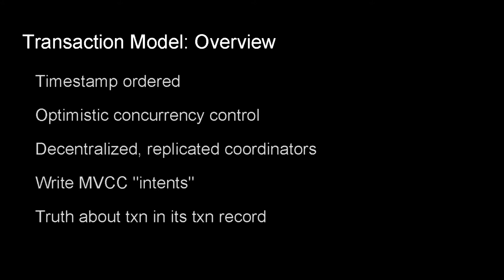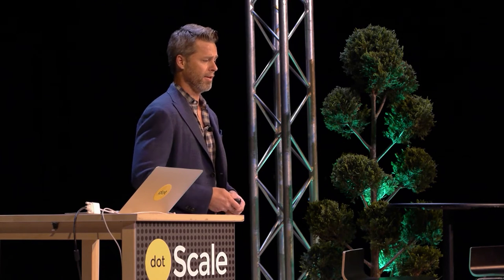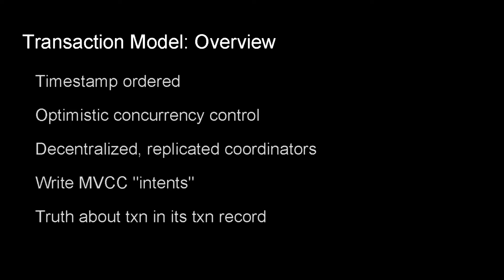The transaction model is timestamp-ordered, meaning we choose timestamps to attach to transactions and use those when checking for access and which version of a value to return. It's also optimistic in terms of concurrency control — we wait until the end of the transaction to decide whether it succeeded and whether it needs to be restarted. We have decentralized replicated coordinators, avoiding the old problem where a coordinator failure would hose the system and hold all locks. During a transaction, all written pieces are stored as MVCC values called intents — provisional writes. There's also a transaction record, which is the single source of truth about whether a transaction is pending, aborted, or committed, and at what timestamp.